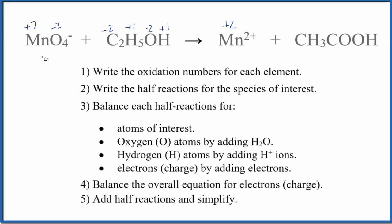Let's balance the redox reaction here for MnO4 minus plus C2H5OH. We're going to do this in acidic medium, and we're going to use the ion-electron method, also called the half-reaction method.